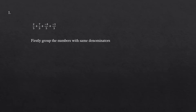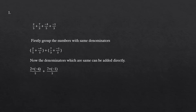First we will group the numbers with same denominators. Now we will consider terms in the bracket. Since the denominators are same, we can add the numerator keeping the denominator. So now we have 2 plus minus 4 whole divided by 5 plus 7 plus minus 1 whole divided by 3, which is equal to 2 minus 4 by 5 plus 7 minus 1 by 3, which is equal to minus 2 by 5 plus 6 by 3.